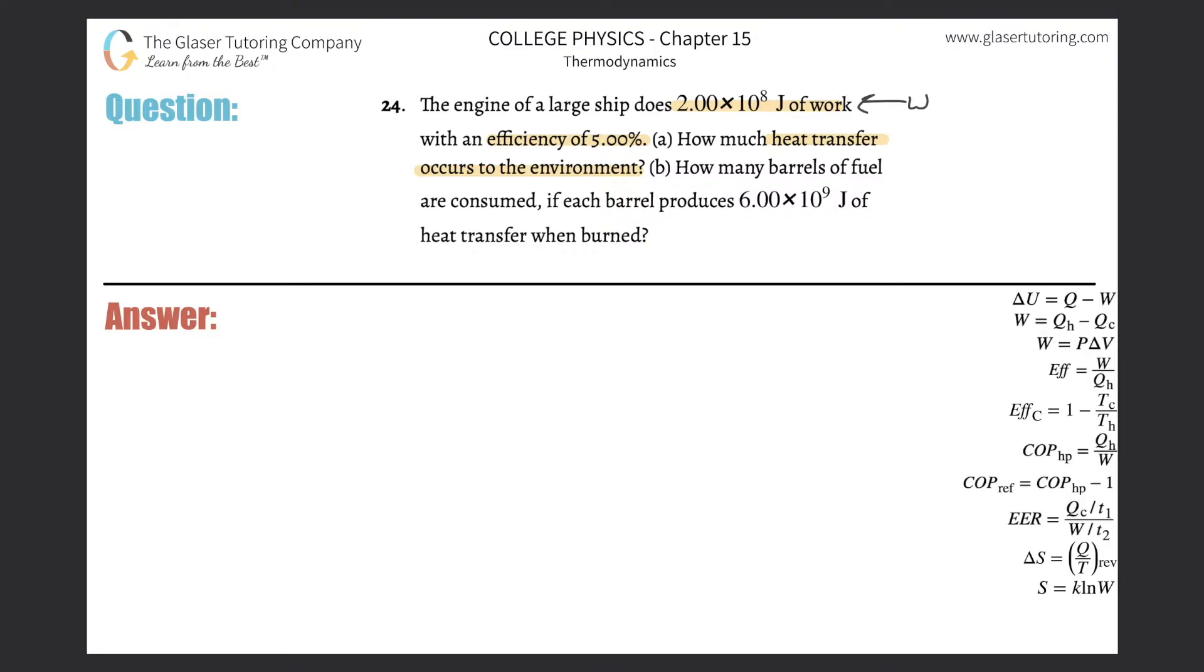We have a work value for an engine, the efficiency E, and need the heat transfer into the environment, which is essentially the heat of the cold reservoir Q_c. I need to figure out how these things are related to one another.